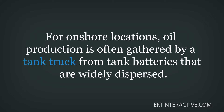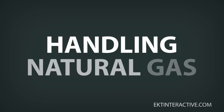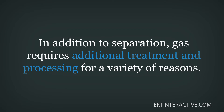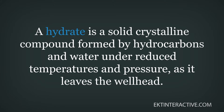Oil and water produced by an oil well move from the wellhead to the separator, through the treating facilities, and finally into stock tanks. A group of stock tanks is referred to as a tank farm or battery. The number of tanks and their individual size will vary depending on the daily production. For onshore locations, oil production is often gathered by tank truck from widely dispersed tank batteries and consolidated into one separation facility with a larger set of tanks.